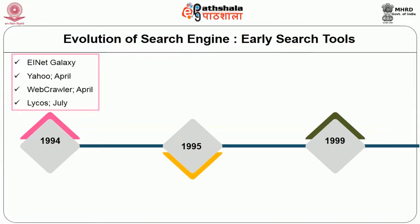The EINet Galaxy web directory was launched in January 1994 and became a success as it also contained Gopher and Telnet search features. In April 1994, Yahoo was launched, and WebCrawler became the first crawler to index entire web pages. In July 1994, Lycos was launched and indexed over 60 million documents, more than any other web search engine at the time. In 1995, InfoSeek was launched and Netscape started using InfoSeek as its default search engine.